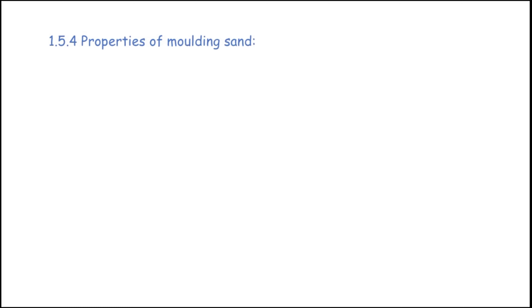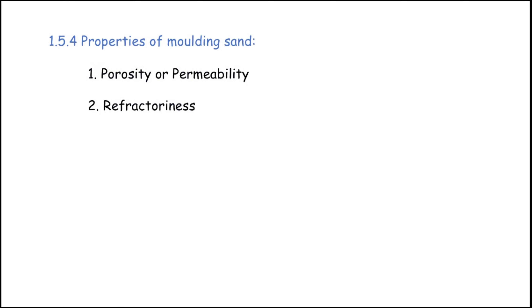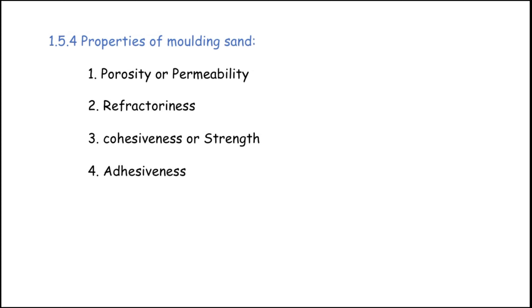Manufacturing process, Unit 1, Foundry Technology, Part 6. Properties of molding sand: the properties are porosity or permeability, refractoriness, coarseness or strength, adhesiveness, grain size and shape, and finally plasticity. We will see each one by one.